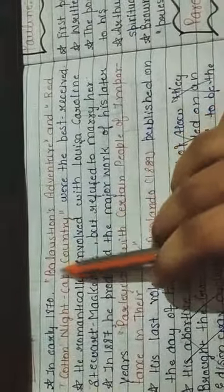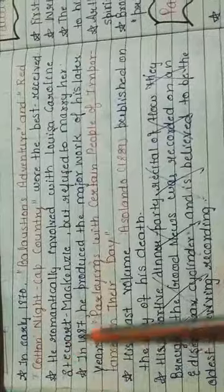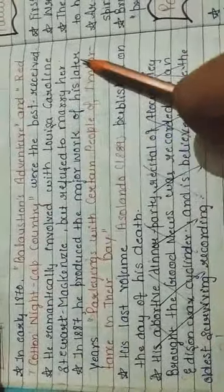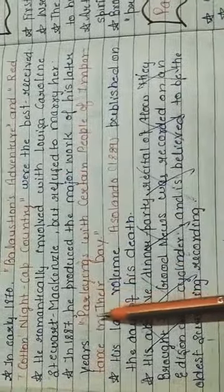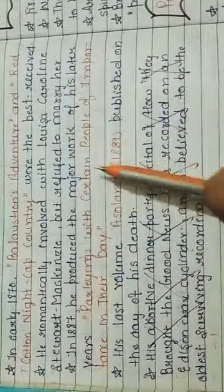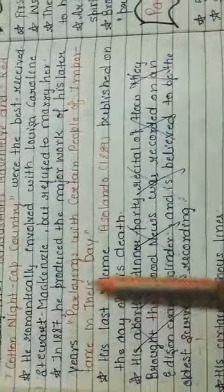In early 1871, Balaustion's Adventure and Red Cotton Night-Cap Country were the best received. He was romantically involved with Louisa Ashburton but refused to marry her. In 1887, he produced the major work of his later years, Parleyings with Certain People of Importance in Their Day.